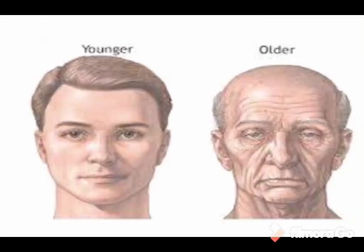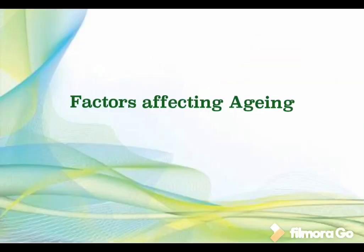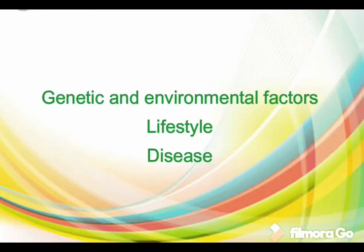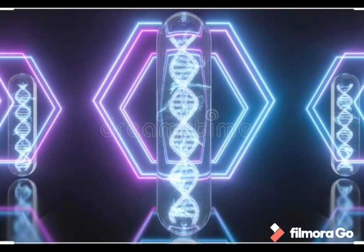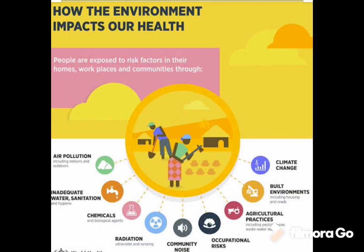Factors affecting aging include genetic factors, environmental factors, lifestyle, and diseases — these are the three main factors relating to the aging process. The aging process depends on the combination of both genetic and environmental factors. Each individual has their own unique genetic makeup and environment, which interact with each other. That is why the aging process can occur at such different rates in different people. Environmental stress associated with exposure to excessive heat and light can accelerate aging.